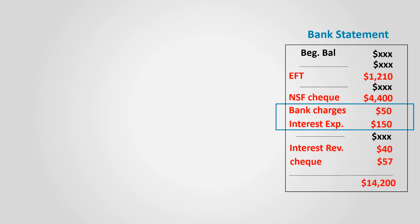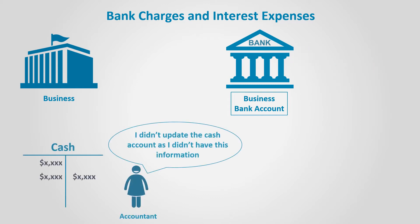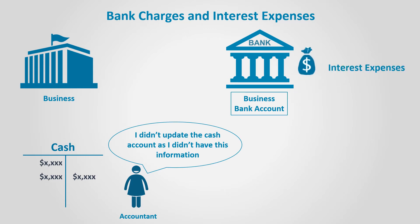Now let's see how the business deals with bank charges and interest expense. The bank usually deducts bank charges directly from the account. The business will get this information only when the bank statement is received, and the accountant will have to update the books thereafter. The same thing applies to interest expenses, which is also deducted — the accountant will deduct it later during the bank reconciliation process.